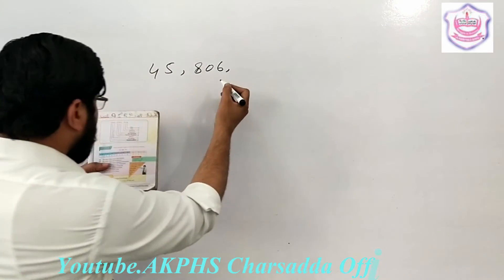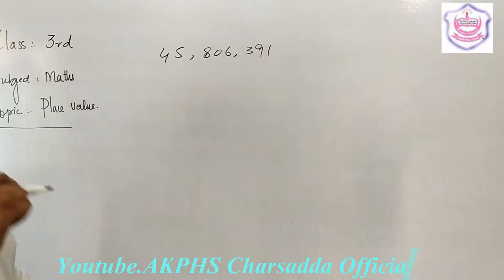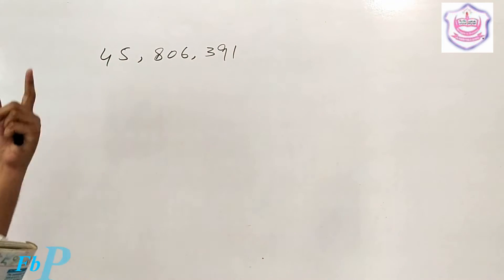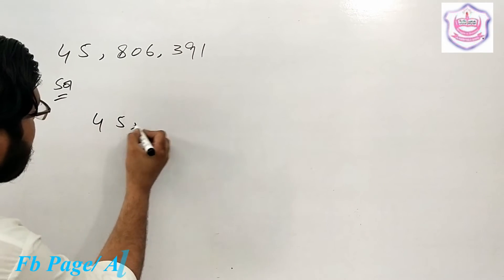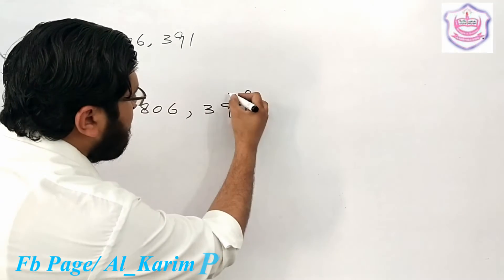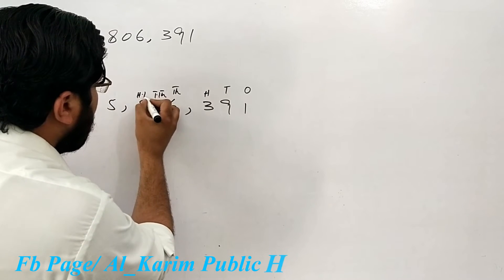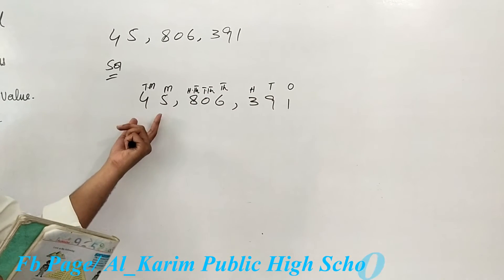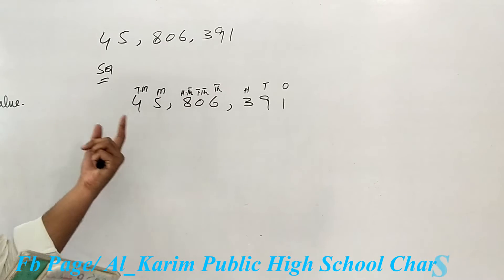The example question is: find the place value of each digit in the number 45,806,391. That means we have to find the value of each digit. The place values are: ones, tens, hundreds, thousands, ten thousands, hundred thousands, millions, and ten millions.